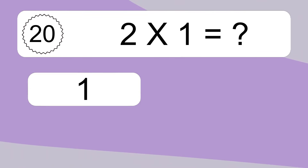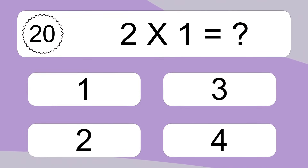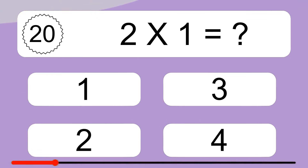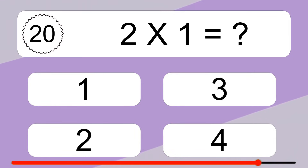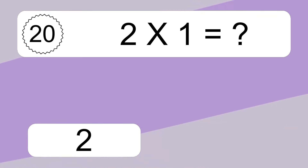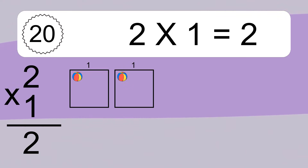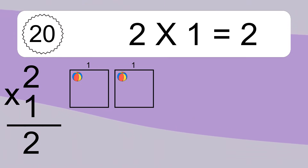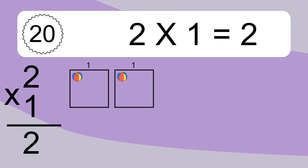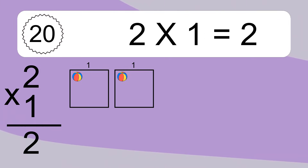2 times 8 equals what? We have 2 boxes and each box has 8 colorful balls inside. If you count all the balls in all the boxes together, you will have 2 times 8 balls.